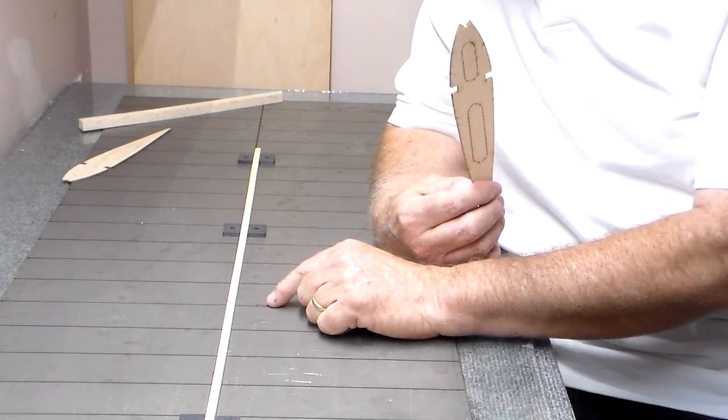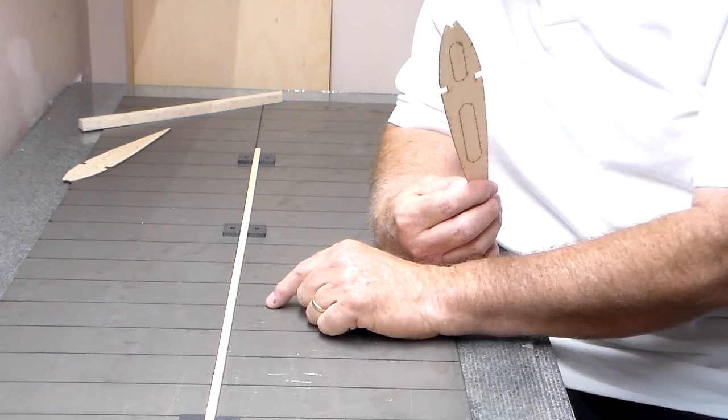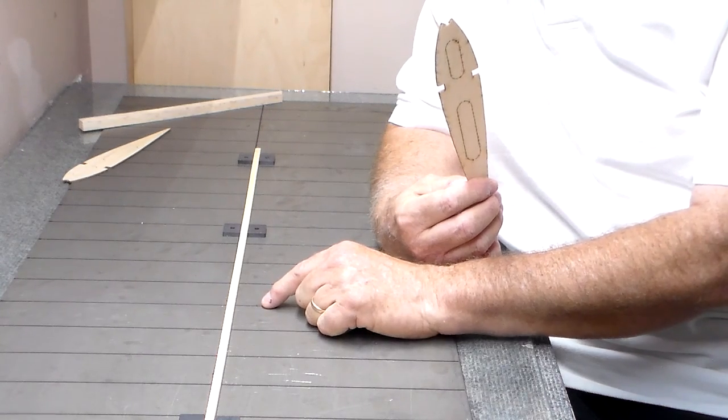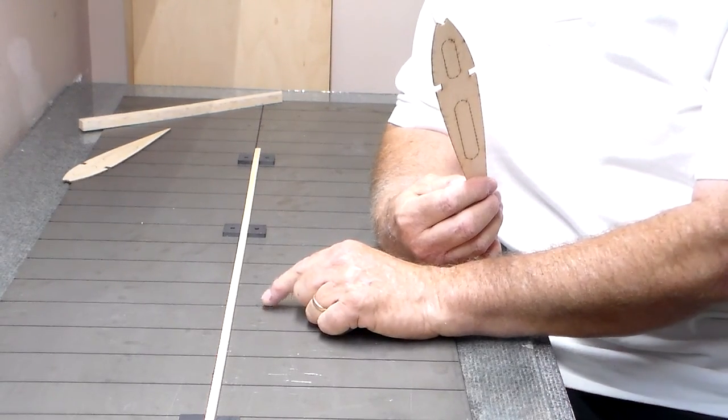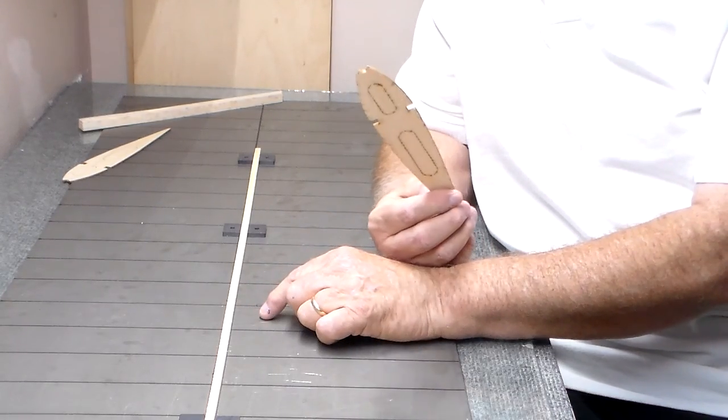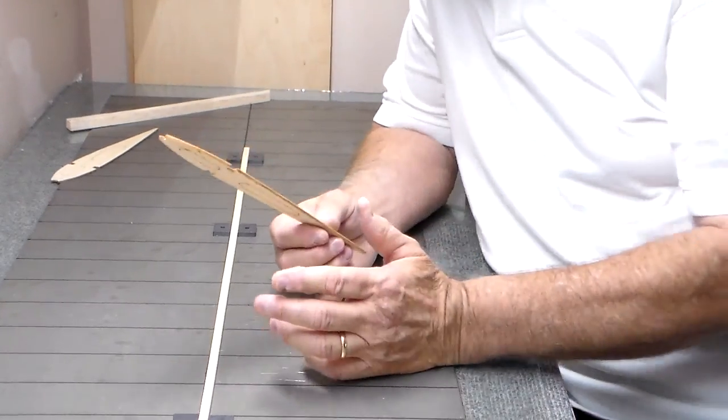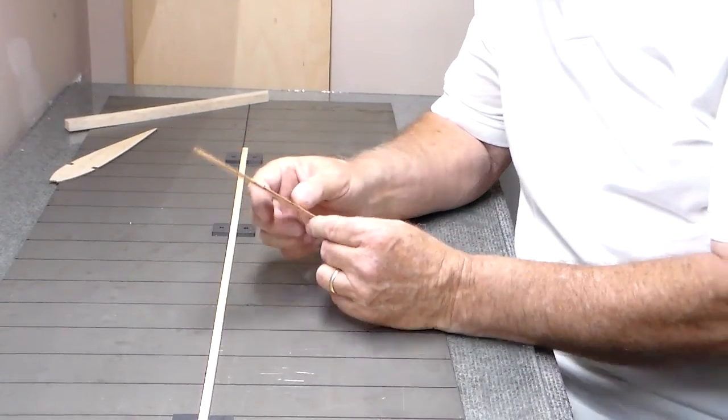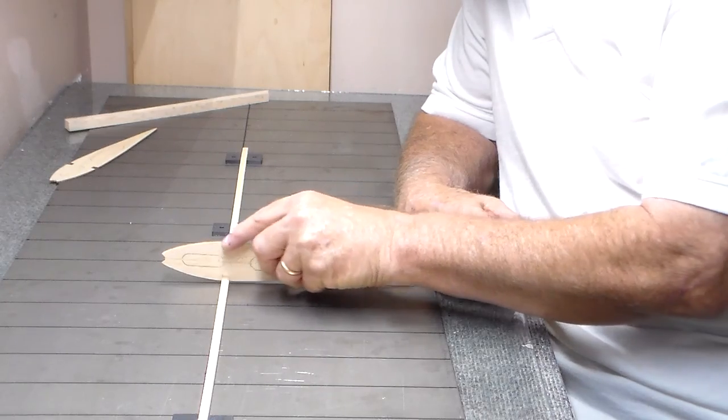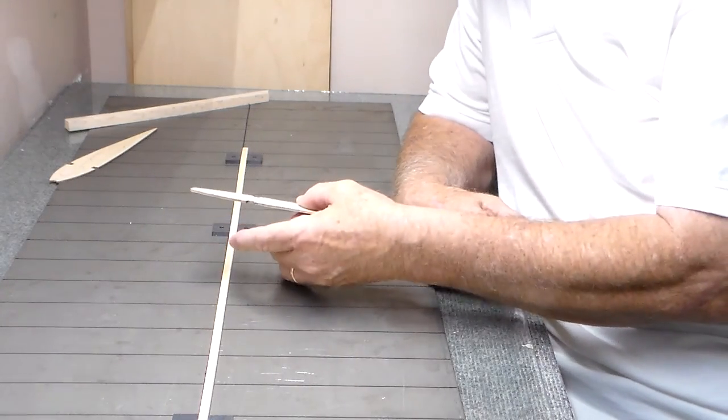I marked a little C on here, you probably can't see it, just for my reference for that being the center. Like the Banshee for example, it comes left or right of center about an inch or so to put your first ribs in. Here's how you work this thing. You take your rib and you just set it right down on top.